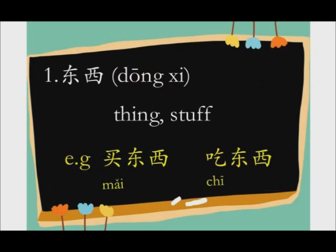If it's pronounced as 东西, then it means things, stuff. For example, 买东西 — buy things. 吃东西 — eat things. Say it again: 东西.